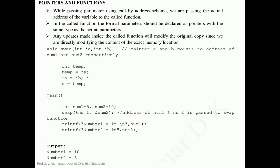In this particular topic we will be learning how to use pointers with functions. While passing parameters using call by address, which is also called as call by reference, we actually pass the address of a variable to the called function. In the called function the formal parameter should be declared as pointers with the same type as that of actual parameters. Any updates made inside the called function will modify the original copy because we are directly modifying the contents of the exact memory location.